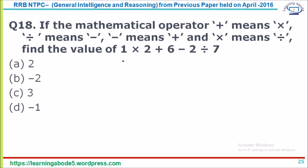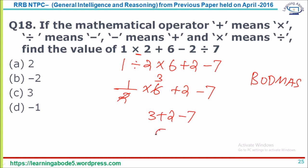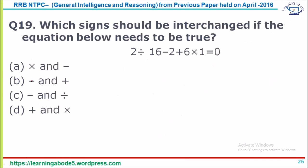Question 18: Mathematical operators are redefined — plus means multiplication, minus means addition, division means minus. The expression becomes: 1 ÷ 2 + 6 − 2 / 7. Substituting: 1 − 2 × 6 + 2 − 7. Using BODMAS: division first → 1 − 2 × 6 + 2 − 7. Multiplication: 2×6=... wait — the actual substitution gives: 1÷2 → 1−2, then ×6, then +2, then −7. Result: 3 + 2 − 7 = −2. Answer option B.